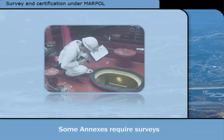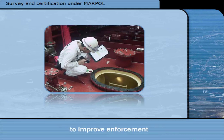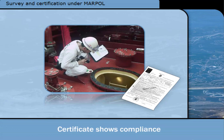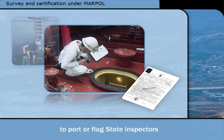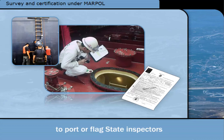Some MARPOL annexes require ships to be surveyed and issued with certificates. This is mainly because the previous anti-pollution convention was considered to have failed due to lack of enforcement, but also because compliance with some MARPOL rules cannot easily be proven while the ship is in service. A certificate can show compliance has been checked. Apart from MARPOL surveys, your ship may be subject to port state or flag state inspections between surveys to ensure that the rules continue to be complied with.